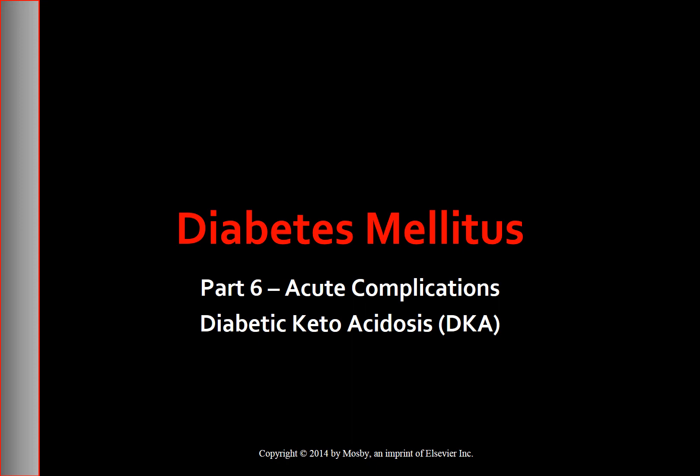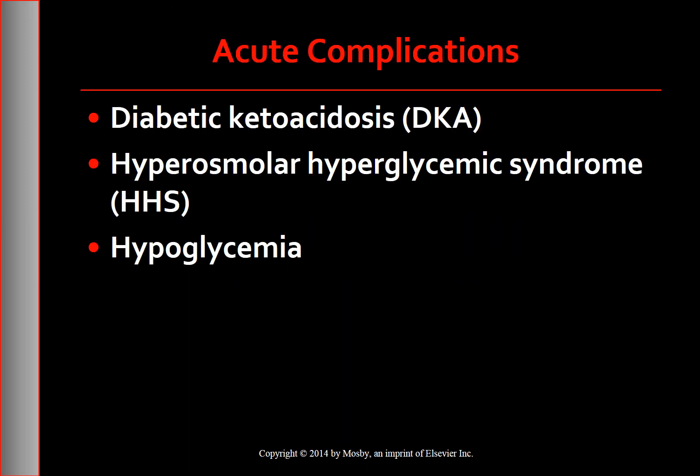Today's topic is on acute complications of diabetes mellitus, which is diabetic ketoacidosis. The acute complications of diabetes mellitus arise from events associated with hyperglycemia, which includes diabetic ketoacidosis, HHS — hyperosmolar hyperglycemic syndrome — and hypoglycemia, also referred to as insulin reaction.